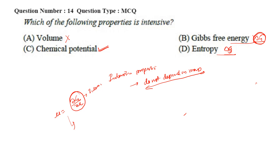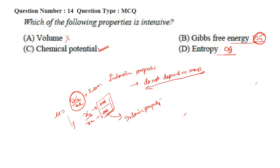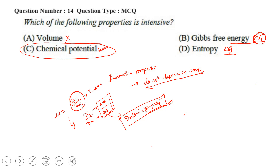A useful trick to remember: chemical potential is ΔG/Δx. ΔG by itself is extensive, and Δx is also extensive. When you divide two extensive properties, the result becomes an intensive property. So chemical potential is the correct option here.